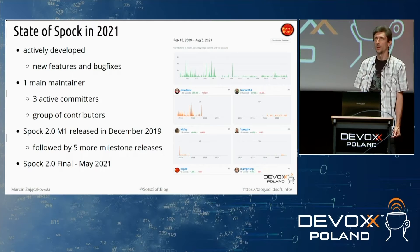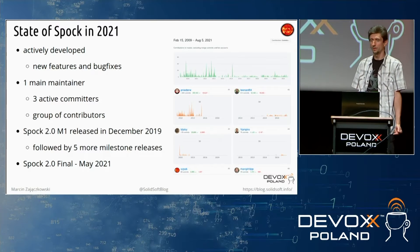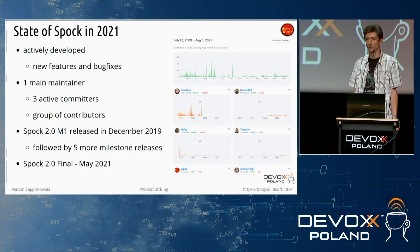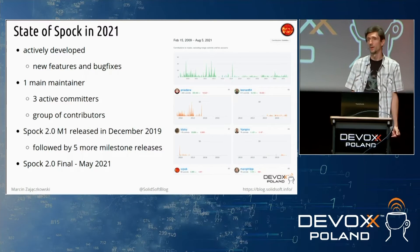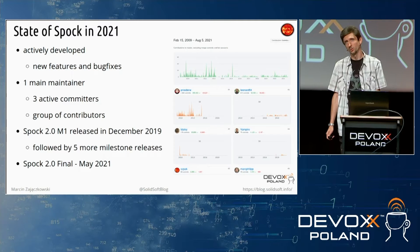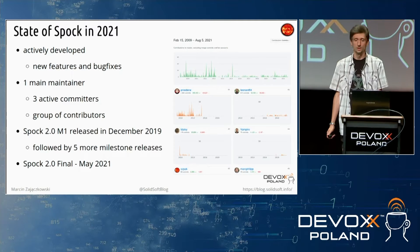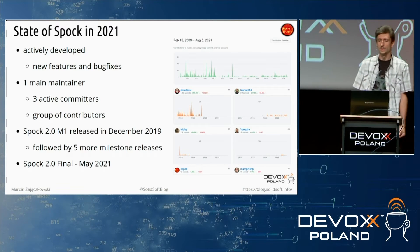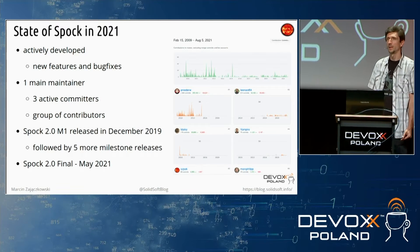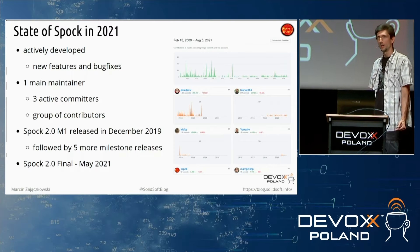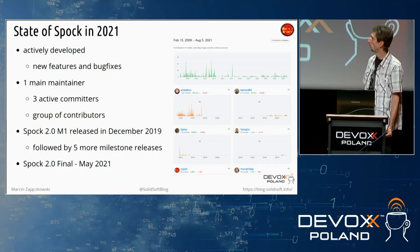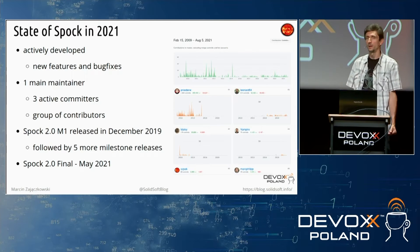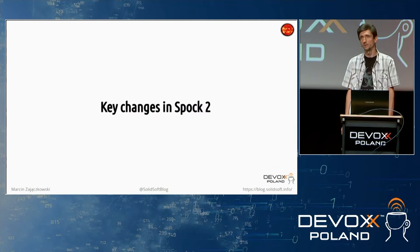In 2021, Spock is actively developed by four committers and a bunch of collaborators. When I last checked, around 100 people had contributed to the project, which is really nice. The effort in the last two years was crowned by the release of Spock 2.0 final in May this year.